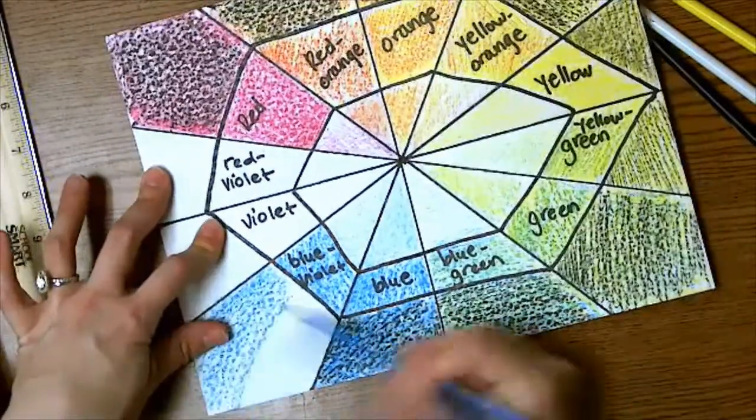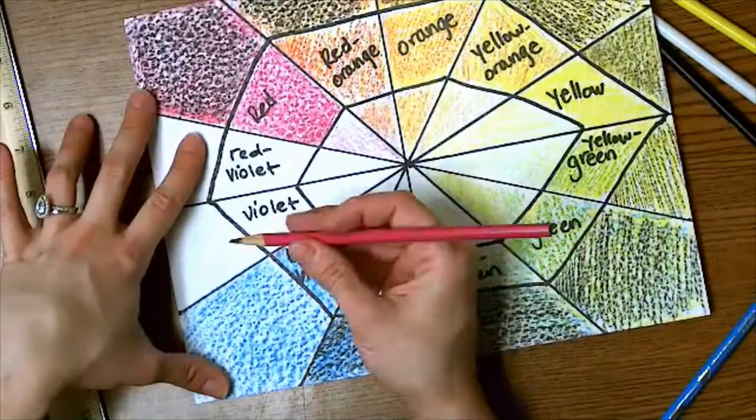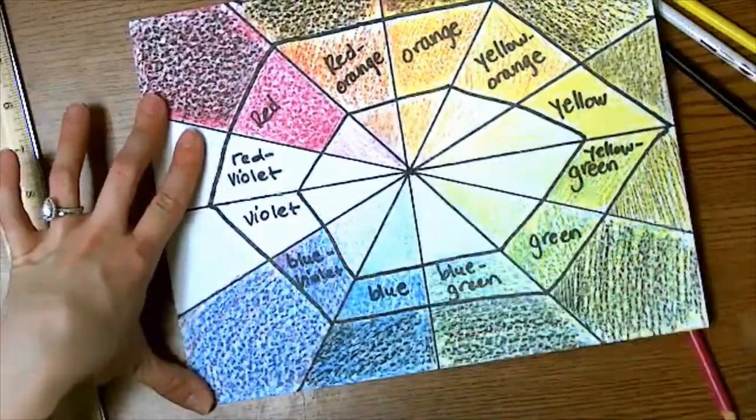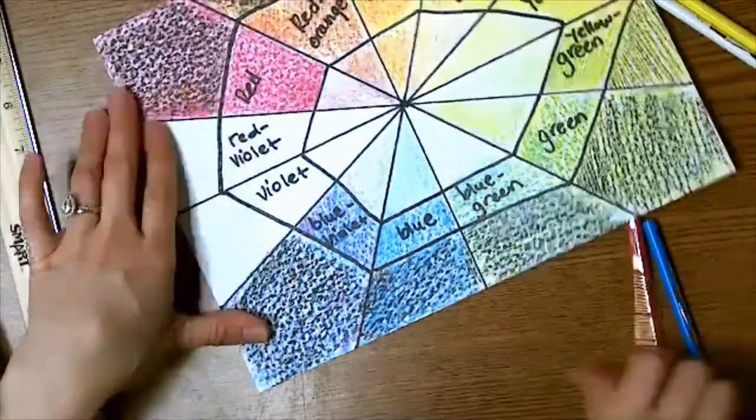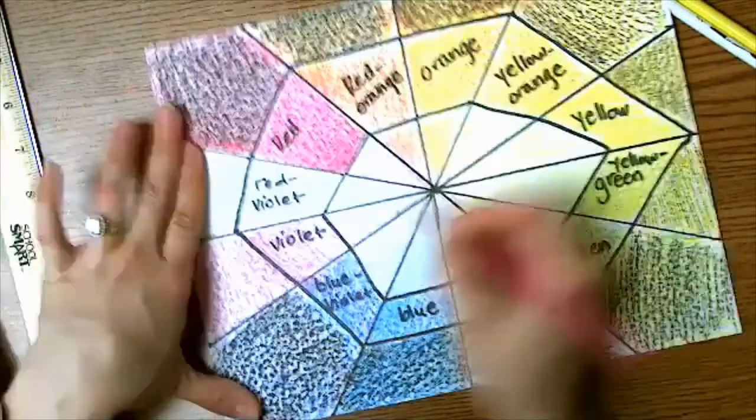For blue violet, I'm starting with blue because it said the word blue first. The violet and the blue are about the same density, so it really won't make a difference which one you start with. Just make sure on the blue violet section you have more blue than magenta.